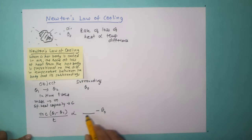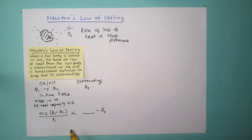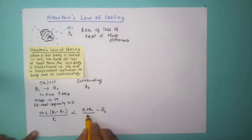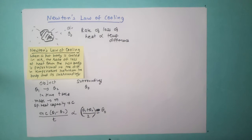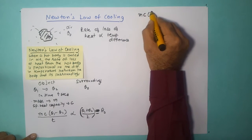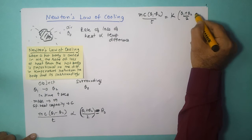Since the temperature of the object is not constant — it starts at theta 1 and ends at theta 2 — we cannot take one value. Therefore we take the average temperature, which is (theta 1 + theta 2)/2, minus theta 0. So the equation for Newton's law of cooling is: M×C×(theta 1 − theta 2)/T = K × [(theta 1 + theta 2)/2 − theta 0].